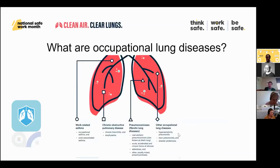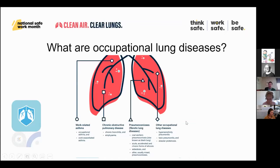So onto occupational lung disease. I'm sure many of you are very well aware of many of the common occupational lung diseases in Australia as WHS professionals. We've grouped them together in this infographic for the purposes of our campaign into diseases like work-related asthma, COPD, the pneumoconioses or fibrotic lung diseases, which includes coal workers' pneumoconiosis and various forms of silicosis.